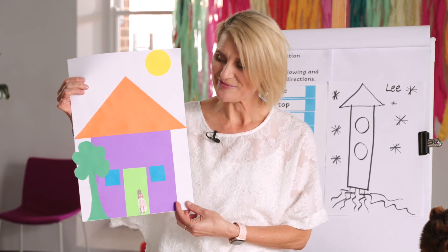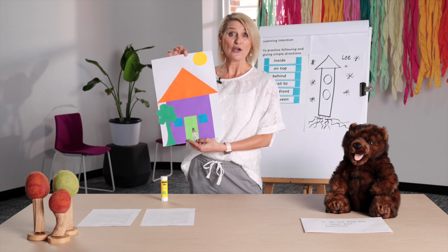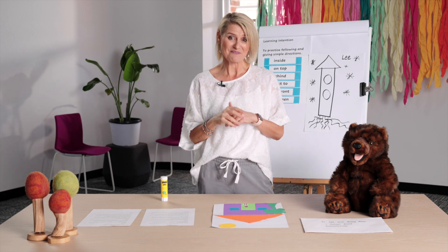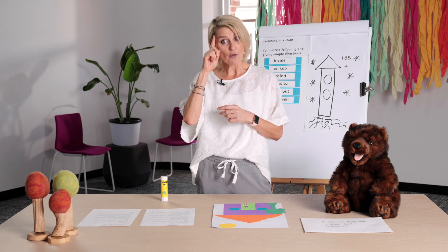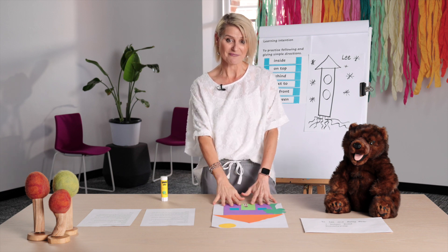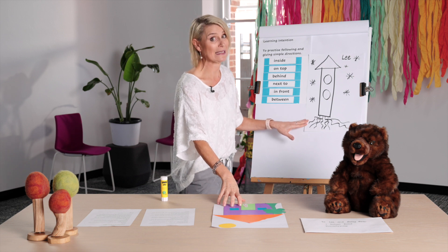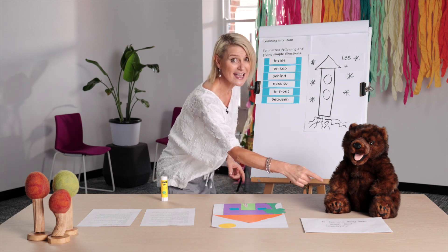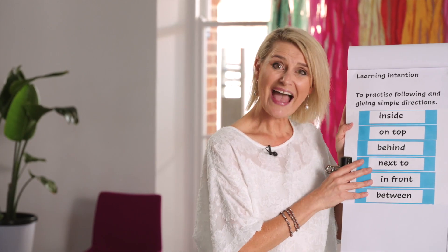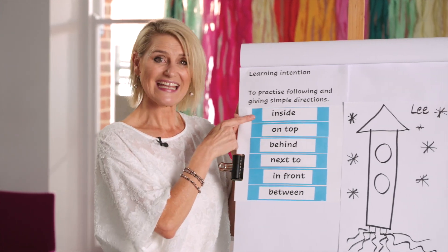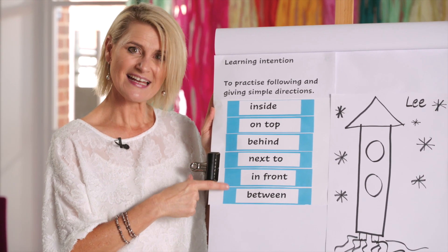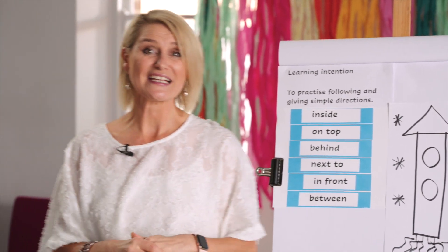That was fun giving and following directions. You might want to create a picture on your paper using positional and movement language as well. In this lesson, we used our knowledge of positional and movement language to create a picture. We also created a great squiggly picture using directions that Baby Bear gave us. Let's remember the words we focused on today: inside, on top, behind, next to, in front, and between. Thanks so much for joining us for today's lesson. We loved learning with you. We hope to see you next time. Bye!